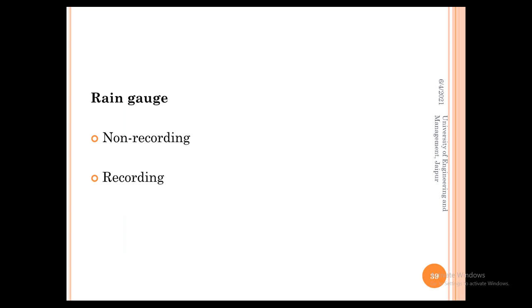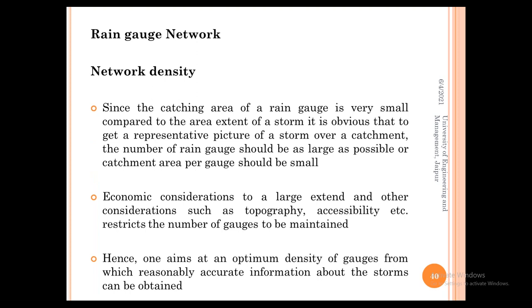There are two types of rain gauge: non-recording and recording. Non-recording gauges can only collect rain water — they cannot record data on their own and need a separate instrument to record. Recording type rain gauges can collect as well as record data simultaneously, and some modern rain gauges can even plot rainfall intensity with respect to time.